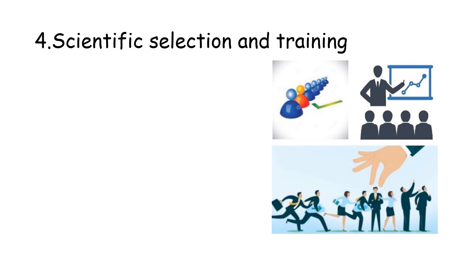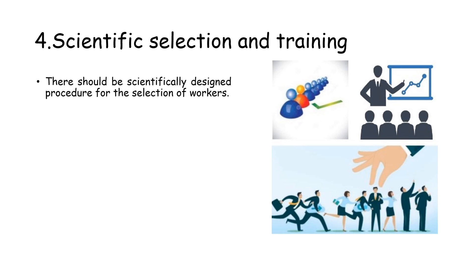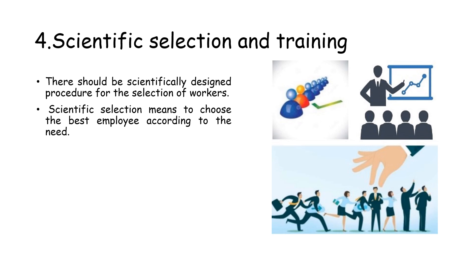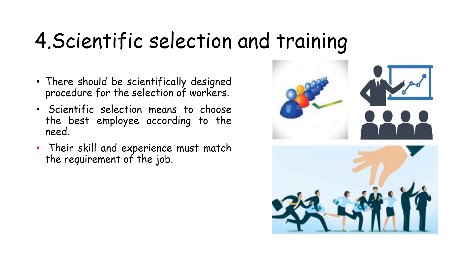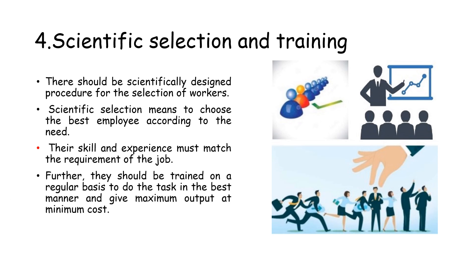The next important technique is scientific selection and training, which has also been highlighted in the principles of scientific management. There should be a scientifically designed procedure for the selection of workers — choosing the best employee according to need, with skill and experience matching the job requirement. Workers should be trained on a regular basis to do the task in the best manner and give maximum output at minimum cost.